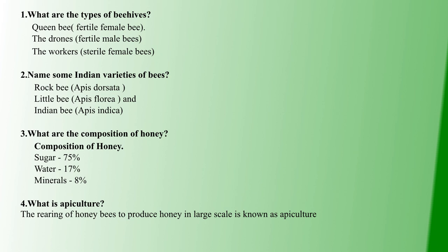Second question: Name some Indian varieties of bees. The Indian varieties of bees are: Rock bee, scientific name Apis dorsata; Little bee, Apis florea; and Indian bee, Apis indica.